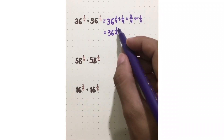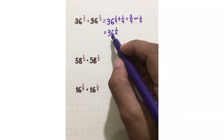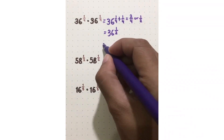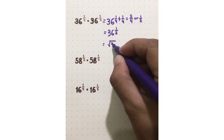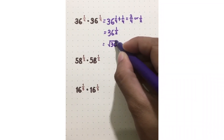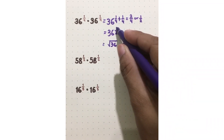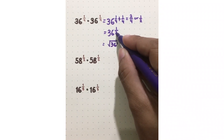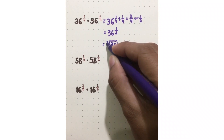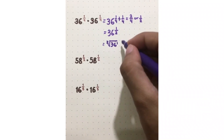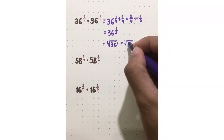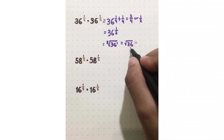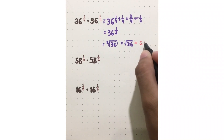Now to simplify 36 raised to 1 half, convert this to radical expression. 36 will be inside the radical sign. The numerator of the exponent, which is 1, will be the exponent of the radicand. The denominator, which is 2, will be the index of the radical. So this is the same as the square root of 36. Since 36 is from 6 times 6, it will be equal to 6.